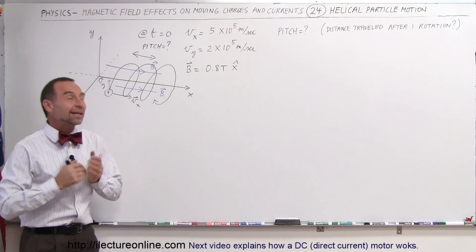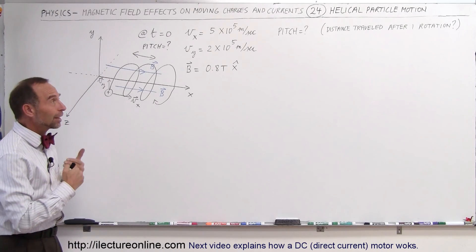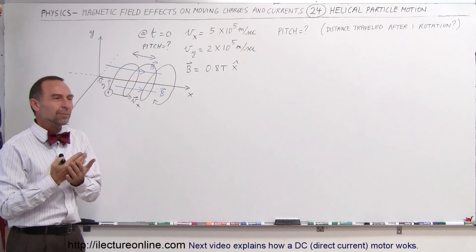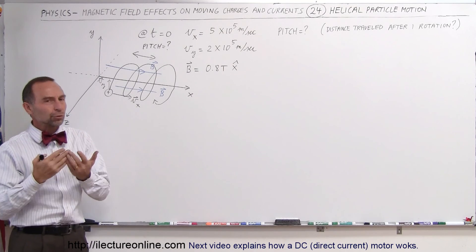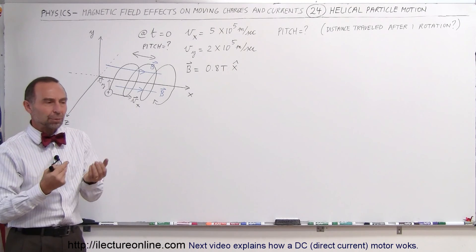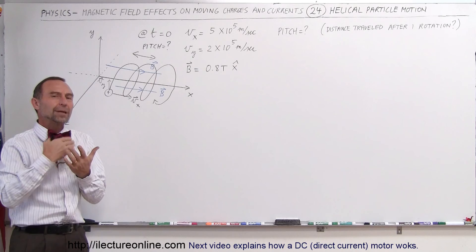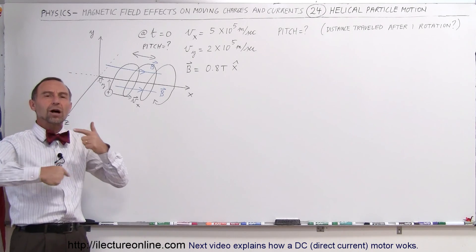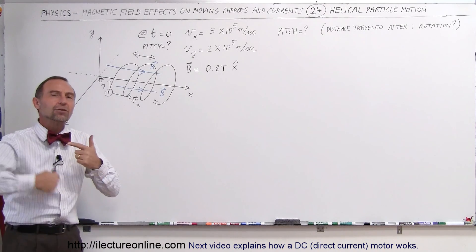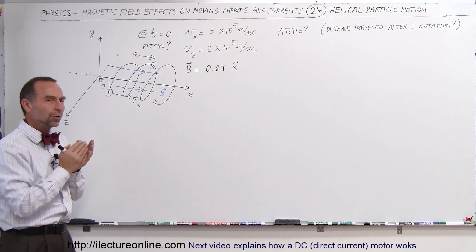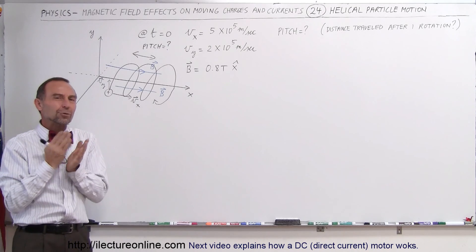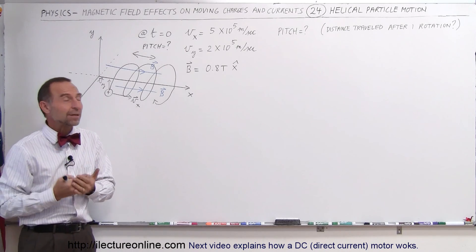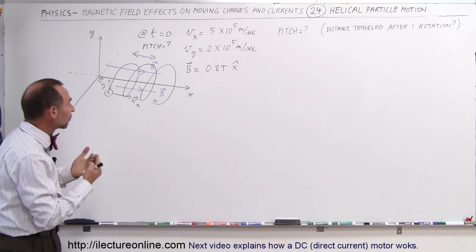Welcome to iLectroOnline. We're going to take a look at helical particle motion. We've been talking about how electrons, protons, or any charged particle that moves through a magnetic field perpendicular to the field will feel a force that causes it to go around in circles. But the velocity direction is not always perfectly perpendicular to the magnetic field — sometimes it's at an angle.